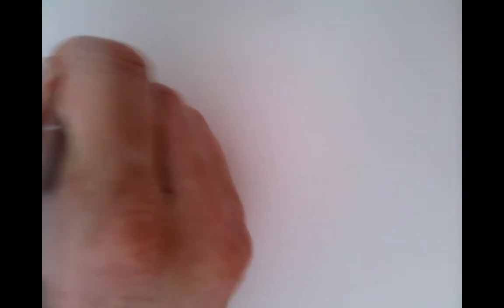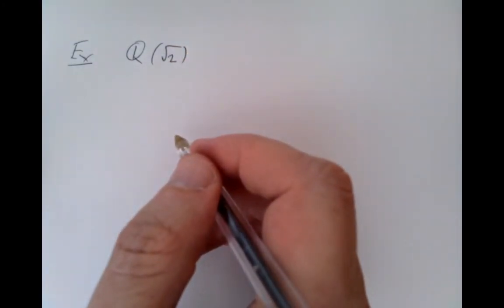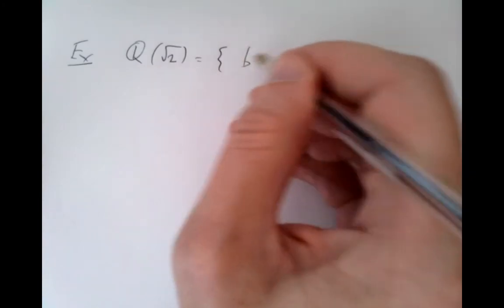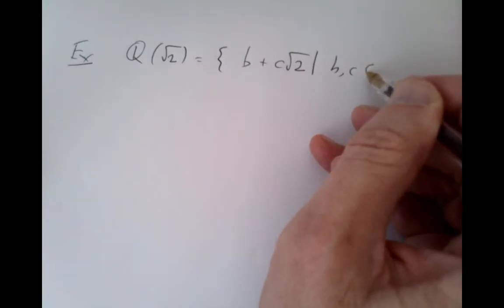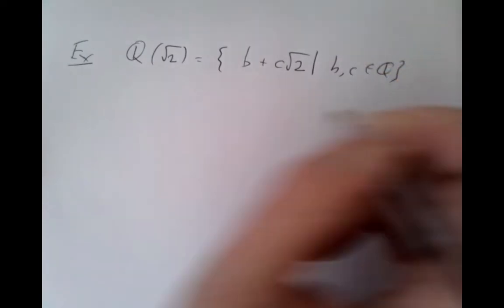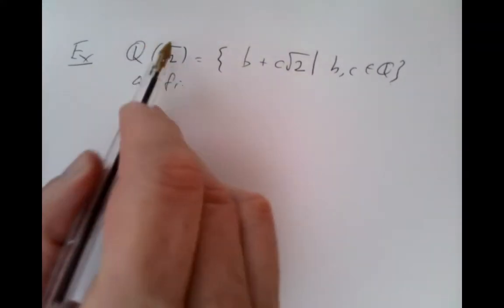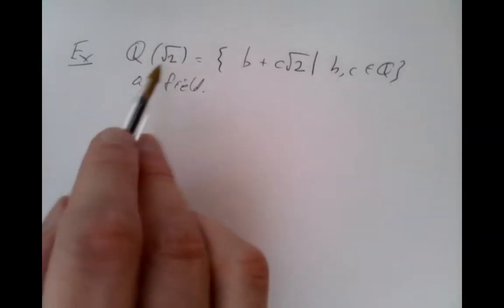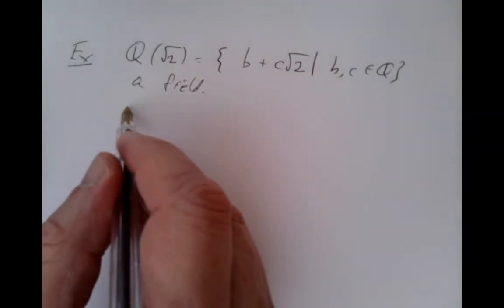Let's consider an example of a field. We write Q with root 2 added to it — Q(√2) — to mean exactly the numbers that look like a rational plus a rational multiple of root 2, where b and c are rational numbers. It's easy to see that this is a field, and that's why we write it with round brackets. It's actually the field given by adding root 2. We could have written it with square brackets to say that it's polynomials that allow root 2 added to them.